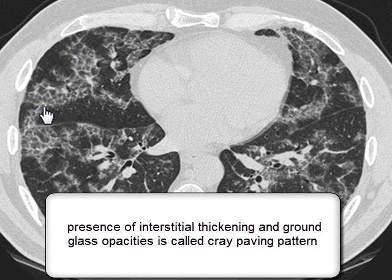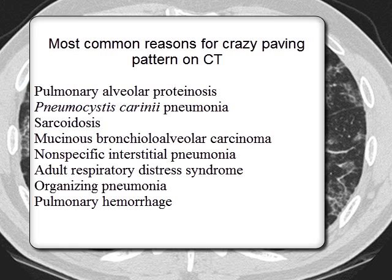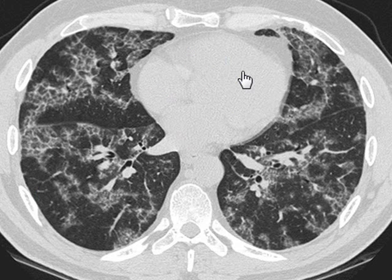The number one culprit for the crazy paving pattern is alveolar proteinosis, which results from accumulation of phospholipoproteins within the interstitium and alveoli. Second on the list is Pneumocystis carinii pneumonia, a fungal infection seen in immunocompromised patients such as those with AIDS or on chemotherapy, as a healthy body can easily handle this pathogen. The differential diagnosis also includes adult respiratory distress syndrome (non-cardiogenic pulmonary edema), sarcoidosis, and pulmonary hemorrhage.